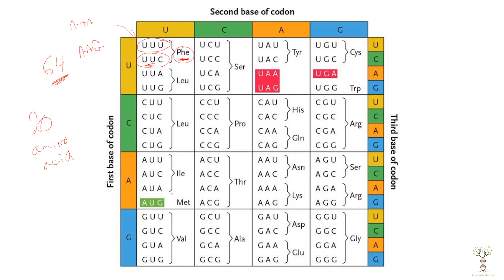Methionine is always the first amino acid — AUG is always the first codon in a messenger RNA molecule. The three codons shown in red are stop codons; they don't code for any amino acid. When a stop codon is encountered there's no transfer RNA with a matching anti-codon, so no amino acid is added. When translation reaches a stop codon and no tRNA comes along, the process ends and the amino acid sequence is complete.